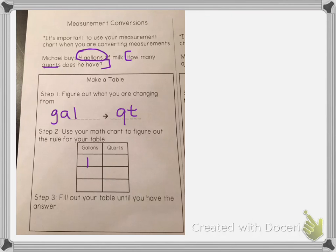So on my table, one gallon is equal to four quarts. So my rule is that I take the number of gallons and I times it by four.